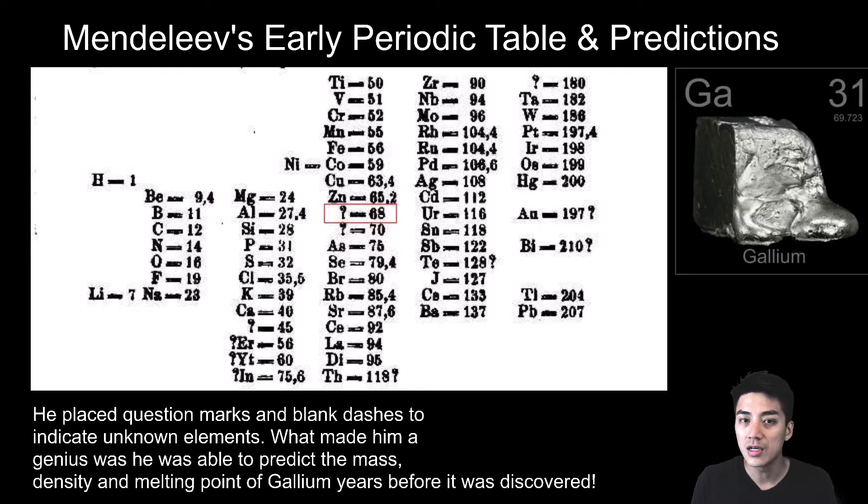He said that gallium would have an extremely low melting point. It turns out it's around body temperature. He predicted the density of gallium, as well as its atomic mass, which was around 68. Well, it turns out the true atomic mass of gallium is about 69.